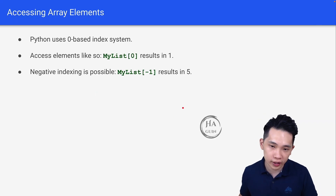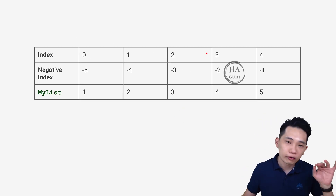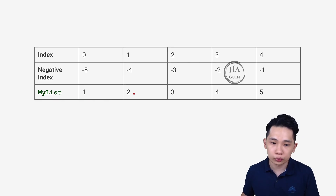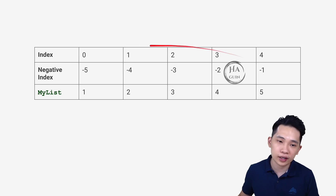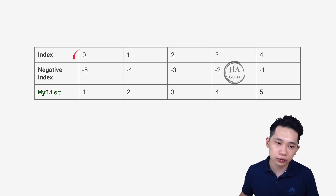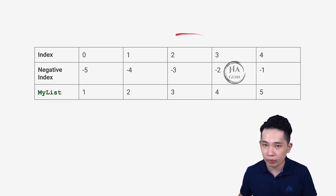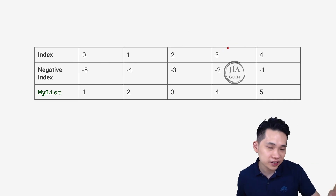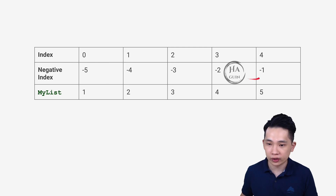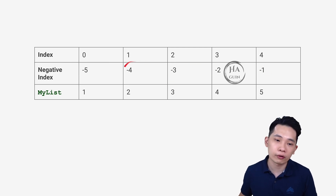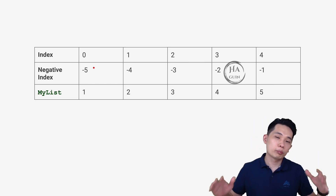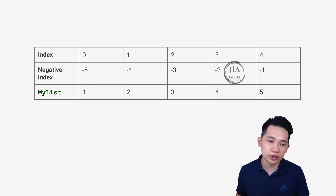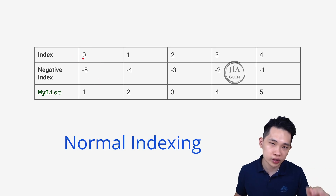Let's look at a visualization to understand better. For my_list = [1, 2, 3, 4, 5], the elements have indices 0, 1, 2, 3, 4 for the normal index. For the last element, you can use -1; second last -2; third last -3; fourth last -4; fifth last -5. You can use either the normal or negative index, but in general we will be using the normal index which always starts from 0.